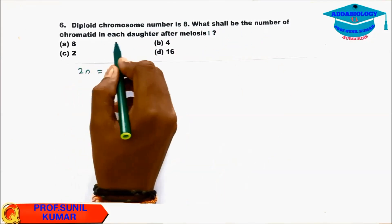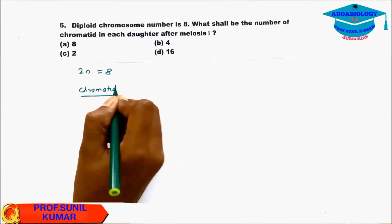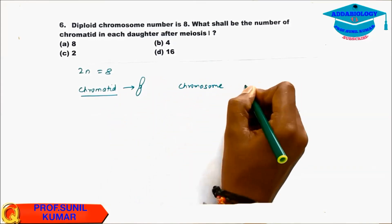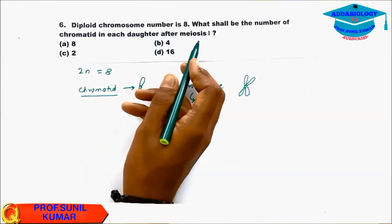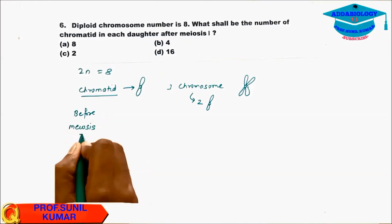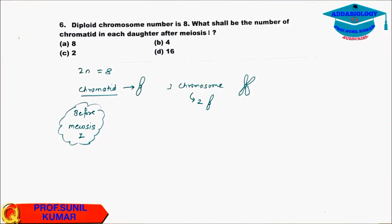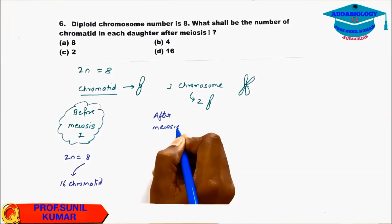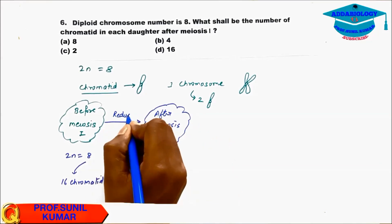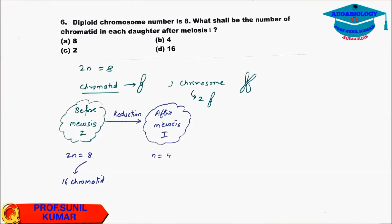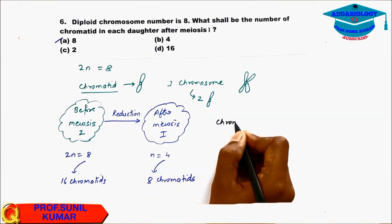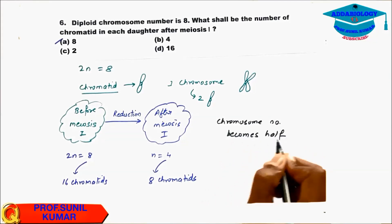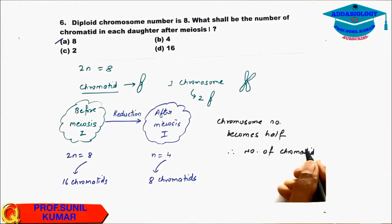Question 6: The diploid number of chromosomes is 2n = 8. One chromosome has 2 chromatids. Before meiosis 1, with 2n = 8, there are 16 chromatids present. After meiosis 1, reduction division reduces 2n to n — so n = 4 and there are 8 chromatids. The answer is 8 chromatids. The number of chromosomes becomes half, and therefore the number of chromatids also becomes half.